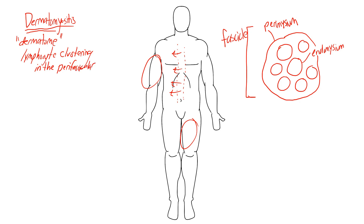You'll see perifascicular atrophy or perifascicular lymphocyte clustering. 'Peri' just means around, so it's around the fascicle — lymphocytes gathering all around the actual fascicle. Importantly, the lymphocytes will not go inside between the individual muscle fibers; they stick to the outside of the fascicles themselves. That's how you recognize this on a histology slide, and it distinguishes dermatomyositis from the other two diseases.